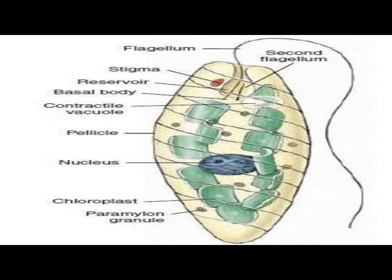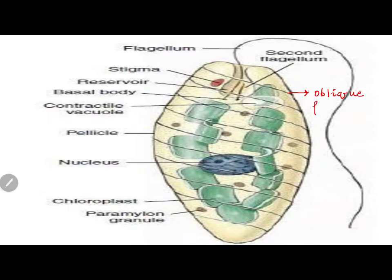Looking at this image of Euglena, you can see the chloroplasts nicely depicted. Whatever you see in pale yellow color is the pellicle — you can imagine the organism in a polythene cover, that cover is the pellicle. You can see black lines that are oblique yet parallel to each other. These oblique, parallel structures are microtubules.